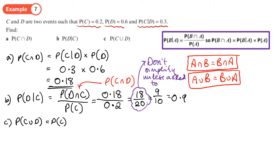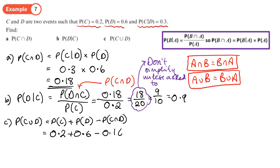For part C we want P(C∪D). That's where we use the addition rule, since that's the only rule with union. So P(C∪D) = P(C) + P(D) − P(C∩D) = 0.2 + 0.6 − 0.18 = 0.62, which can also be written as 31/50.